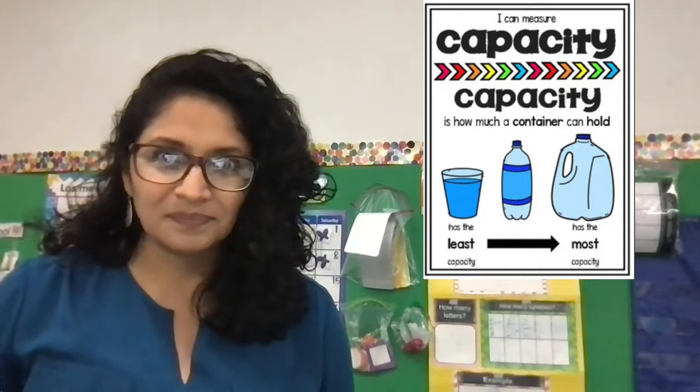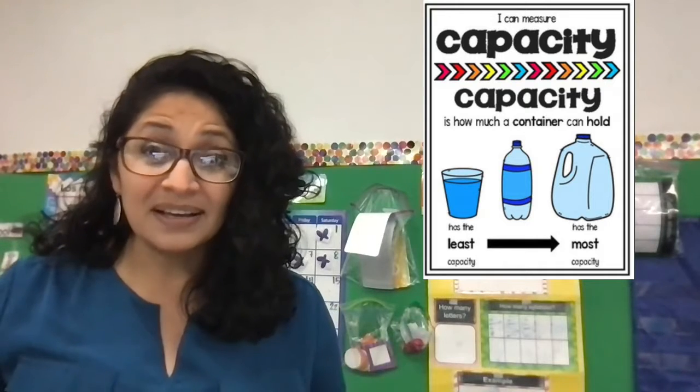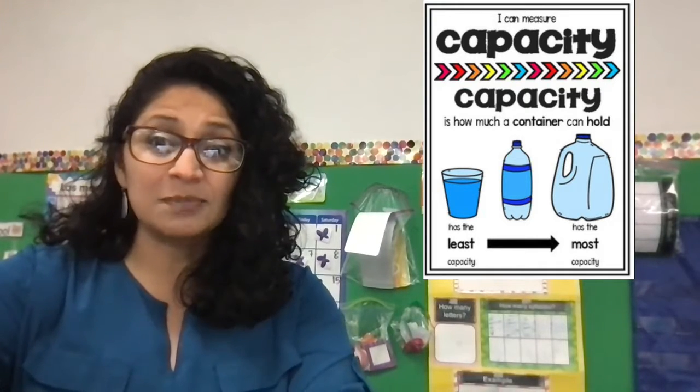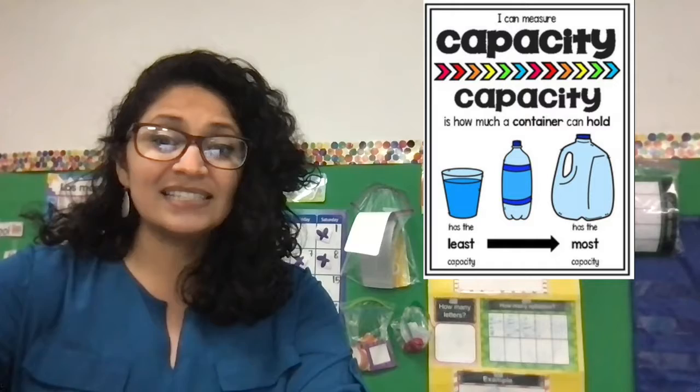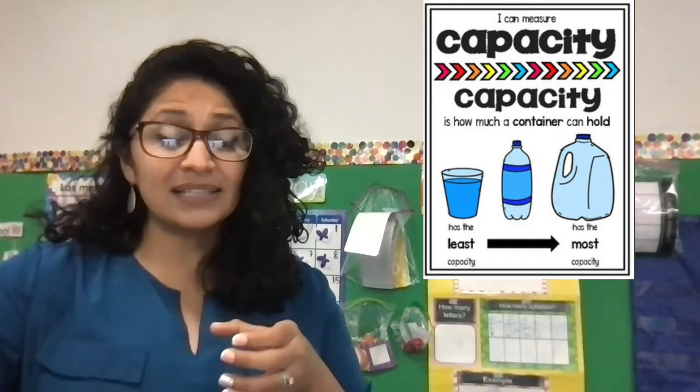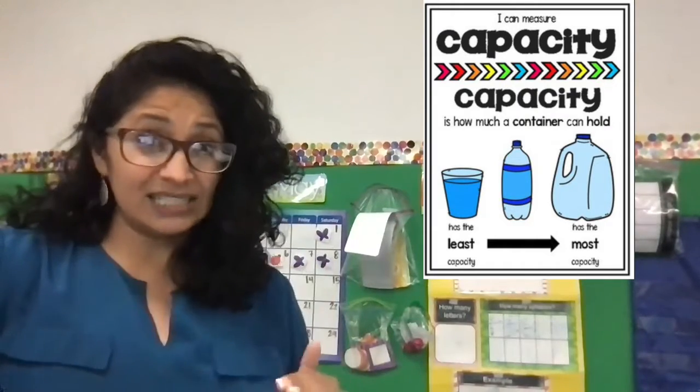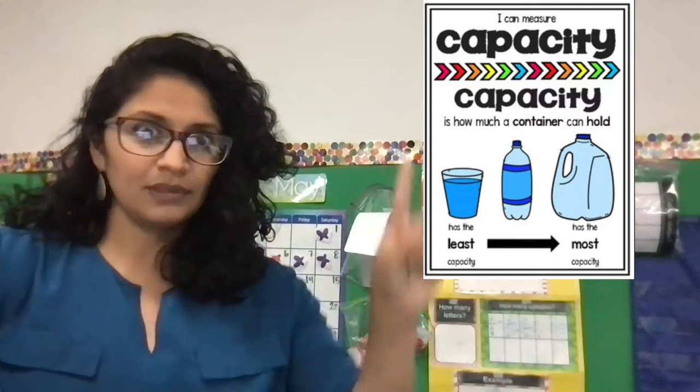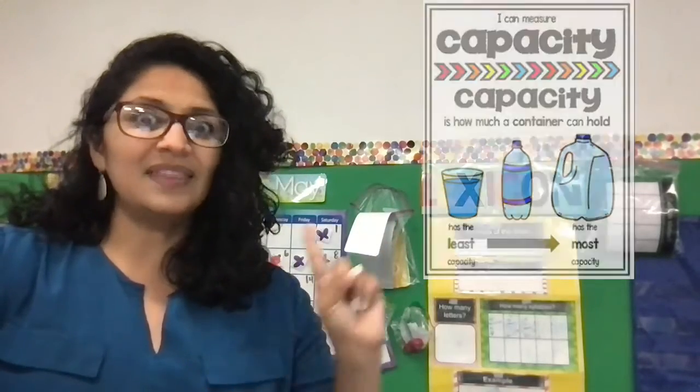I want to show you a poster before we get into our activity. It says 'How much can a container hold?' You've all drunk water before — you use a cup. On this poster, a cup has the least capacity, meaning it holds the least amount of water. Then comes the two-liter bottle, then the gallon.